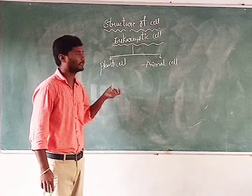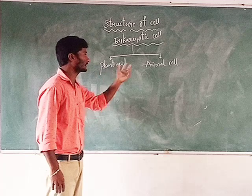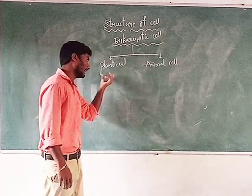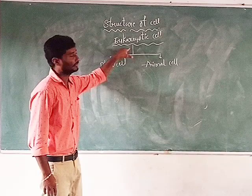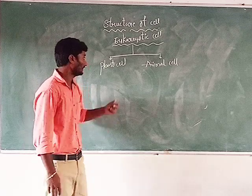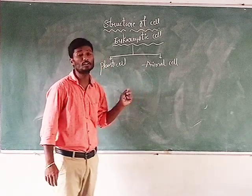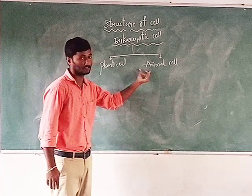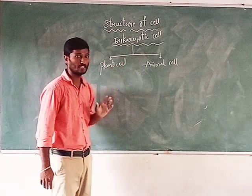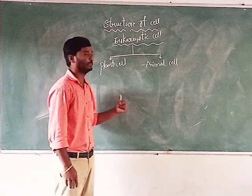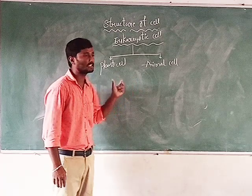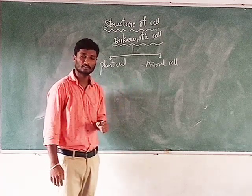Based on organisms, eukaryotic cells are divided into two types: plant cells and animal cells. Plants also belong to eukaryotic organisms, and animals also belong to eukaryotic cells. Both plant cells and animal cells consist of a nucleus. Both living organisms belong to eukaryotic cells. In a previous class we discussed the structure of plant cells and animal cells. This is our topic for today. Thank you so much.